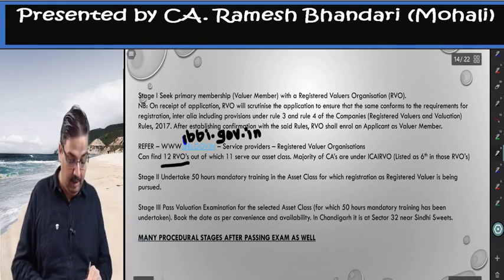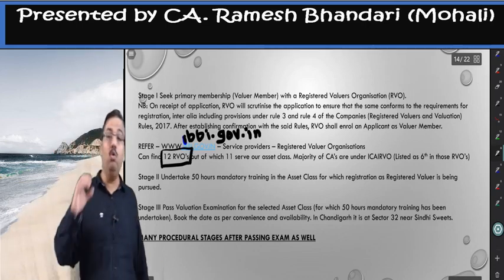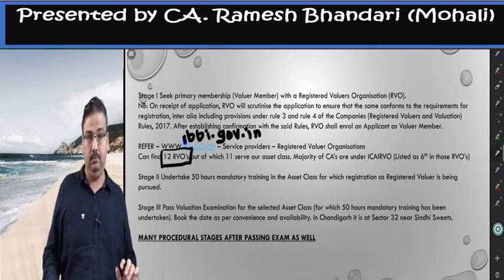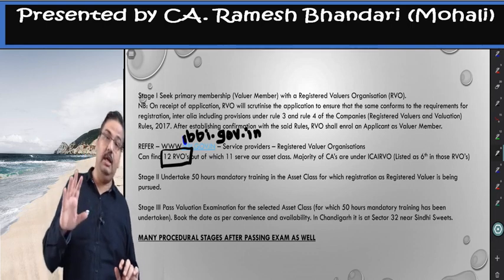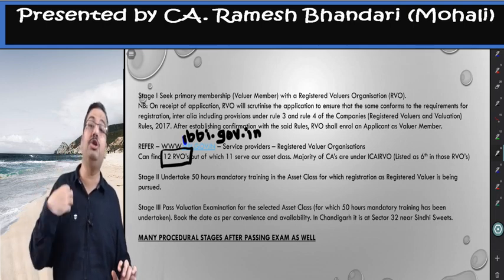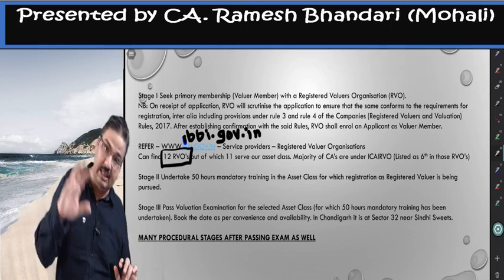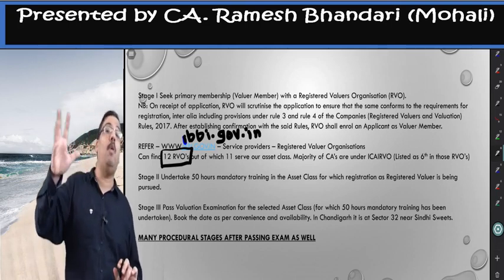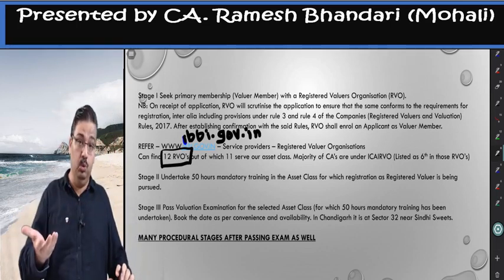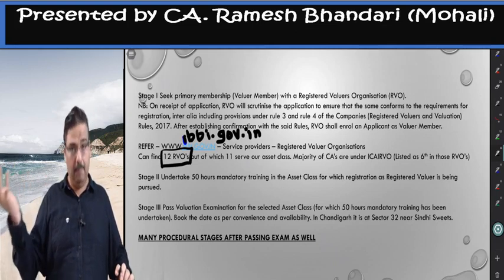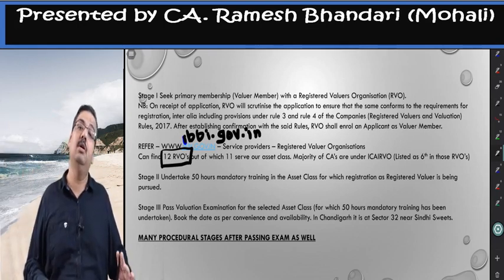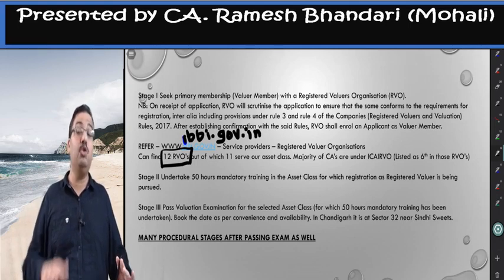There are 12 RVOs listed. Out of these 12, eleven deal with the SFA category as well. Some institutions deal with all three classes — land and building, plant and machinery, and SFA. Our ICAI institute and one more deal only in SFA. So you have 11 options to select from. Whoever conducts training at your location — if you're in Chandigarh or nearby — you can plan to join that. Metro and sub-metro cities have more regular training schedules.